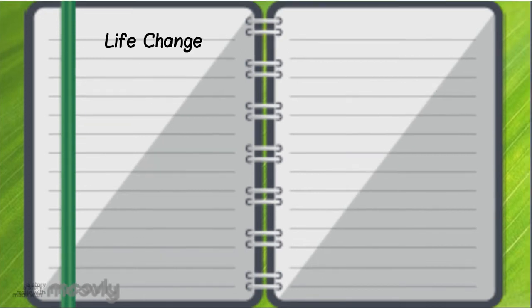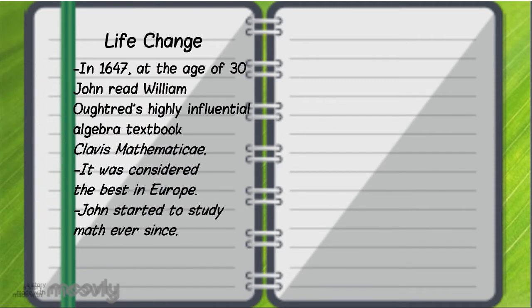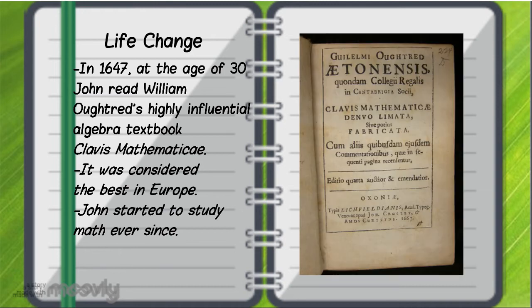Although John really loved math, it wasn't until the age of 30 that he started pursuing it. In 1647, John read William Oughtred's highly influential algebra textbook called Clavis Mathematica, considered to be the best in Europe. John started to study math ever since.